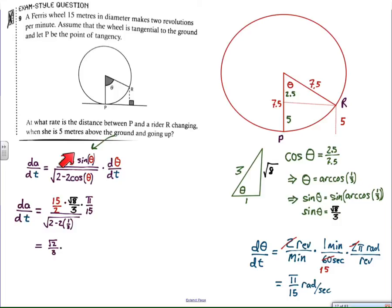Substituting all our known values—the sine, the cosine of theta, and dθ/dt—the rest is mathematical cosmetics. This turned out to be really quite clean. I got it worked out to be π over √6. At the exact moment when the rider is 5 feet above the ground, the distance from R to P will be moving at a rate of π/√6 meters per second. It turns out to be about 1.28 meters per second, but that's neither here nor there.